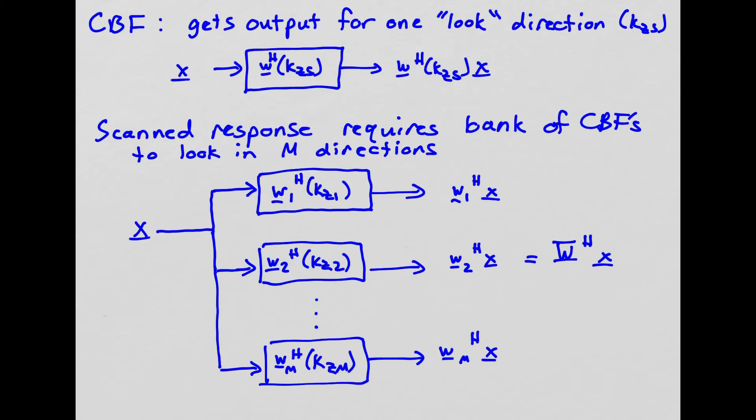So the conventional beamformer gets us the output for one particular direction. We call it the look direction, that's associated with KZs. It says which direction is our spatial filter designed for? It's designed for the look direction, KZs. And a single conventional beamformer gets us the output in that direction.